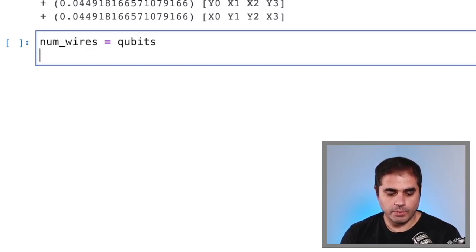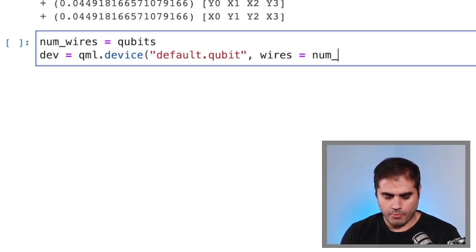Then we need to define a quantum device. So we define dev is equal to qml.device. We'll simply use a default qubit device. So default.qubit. And then the number of wires in this device will just be num_wires.